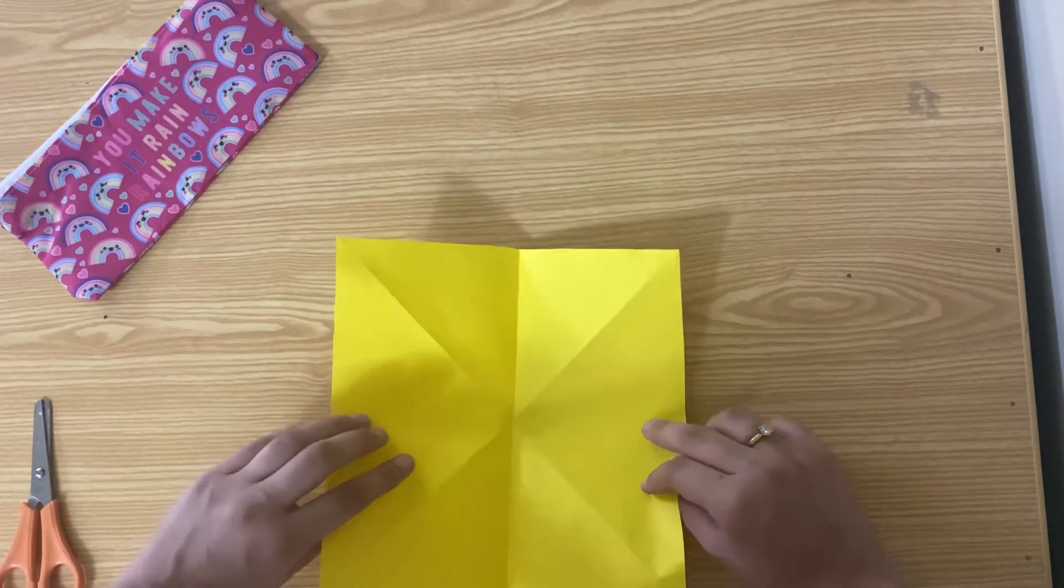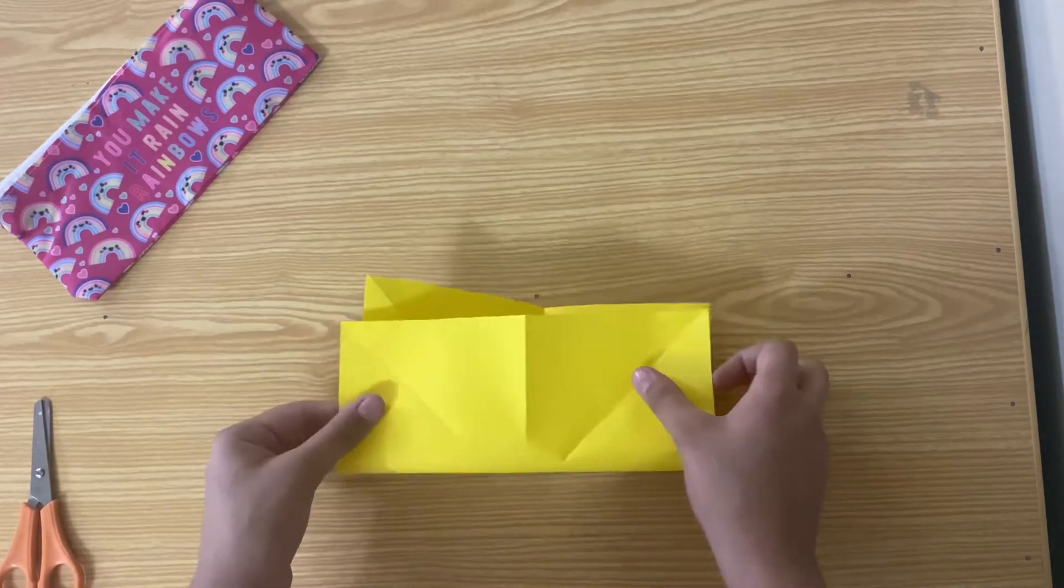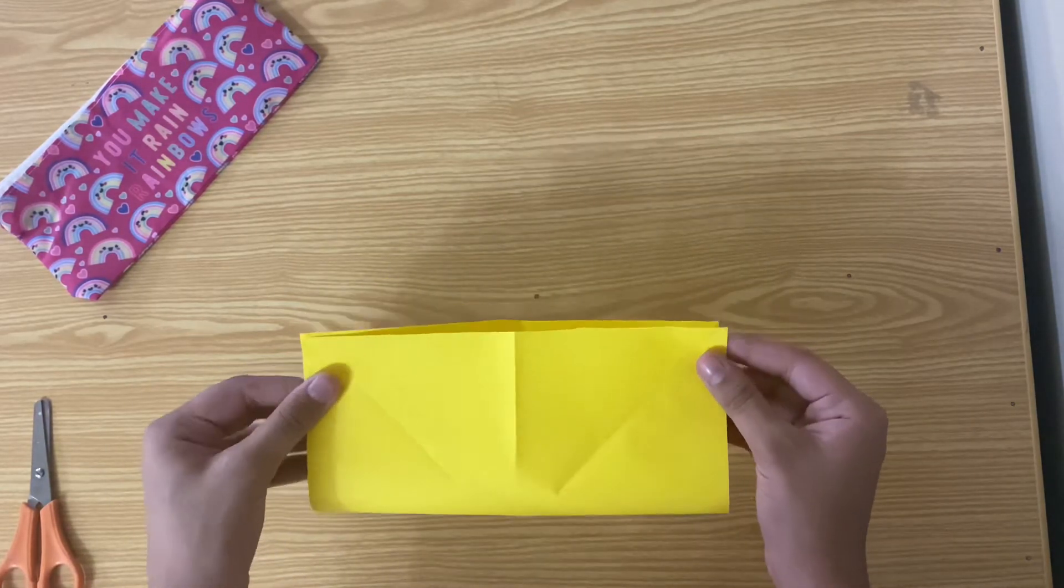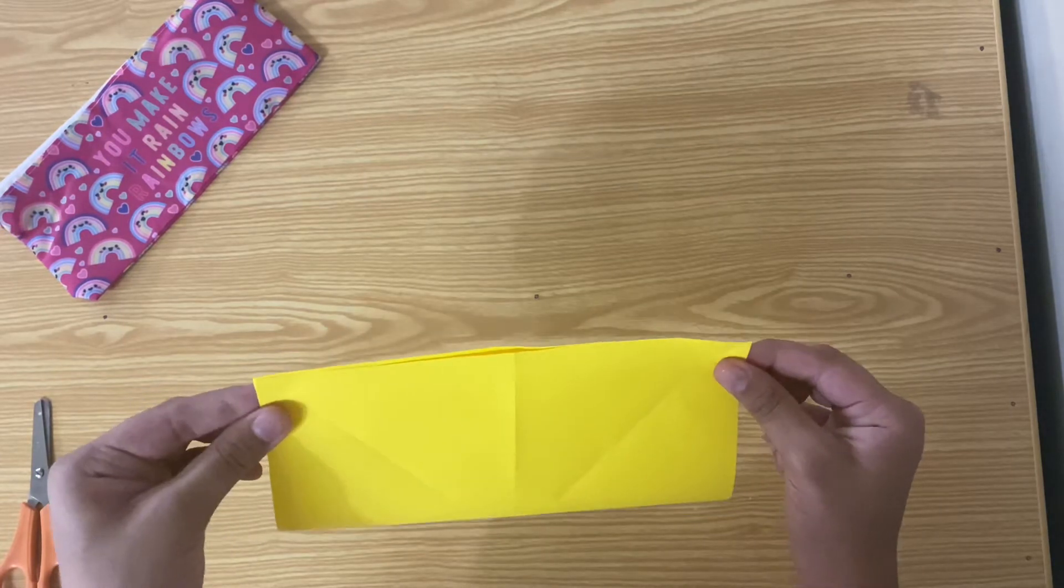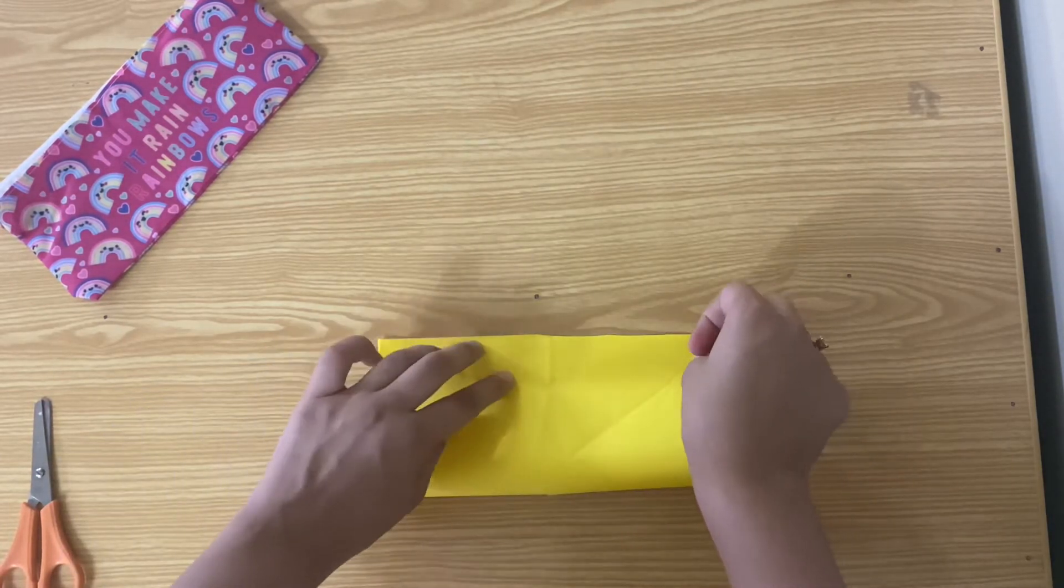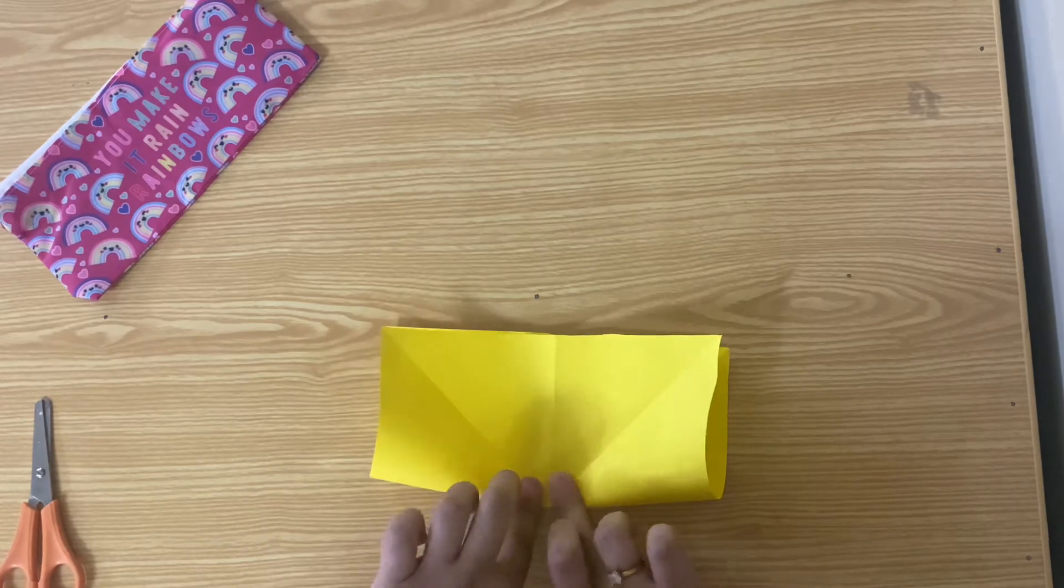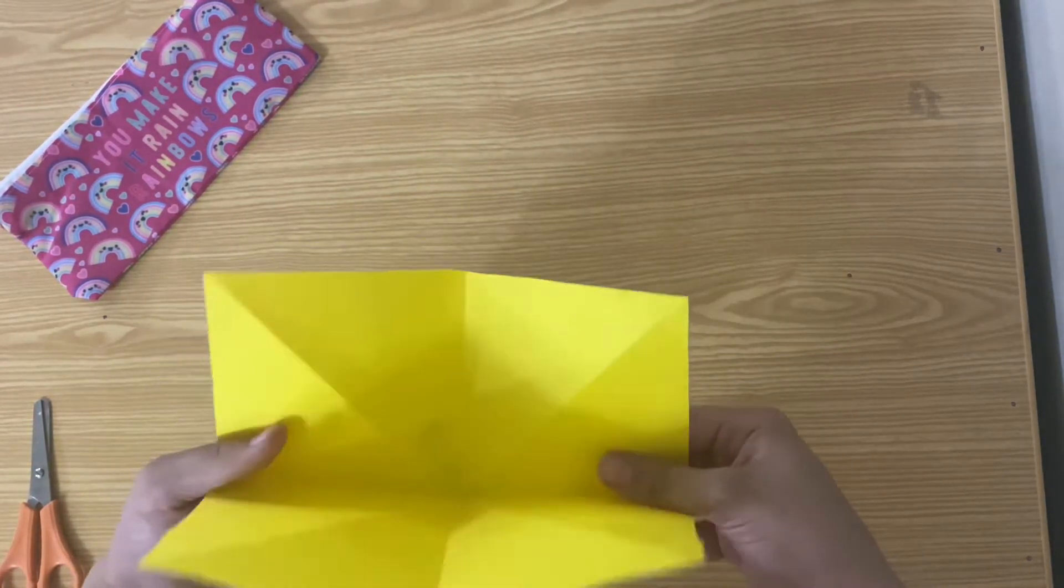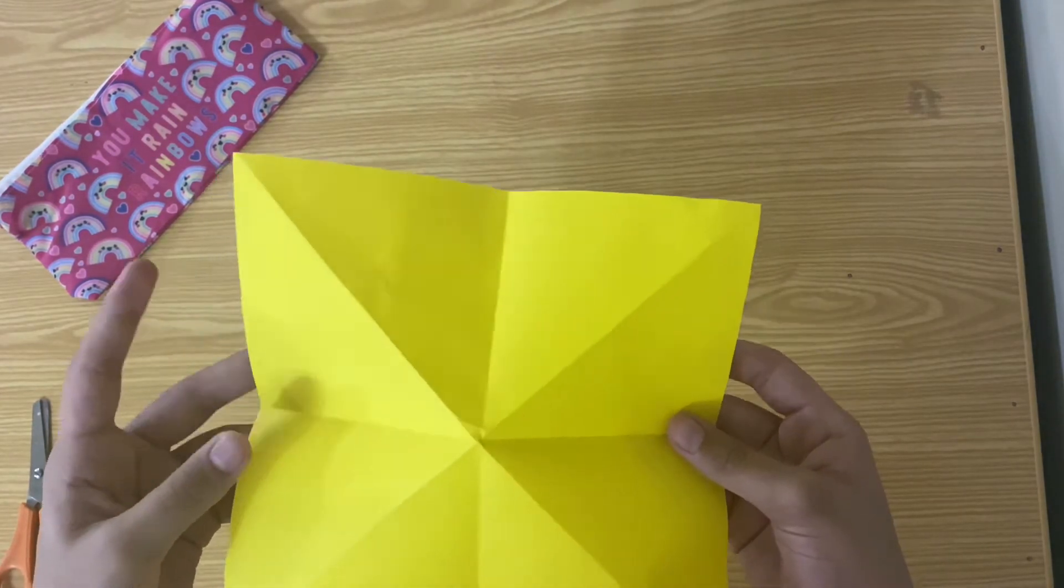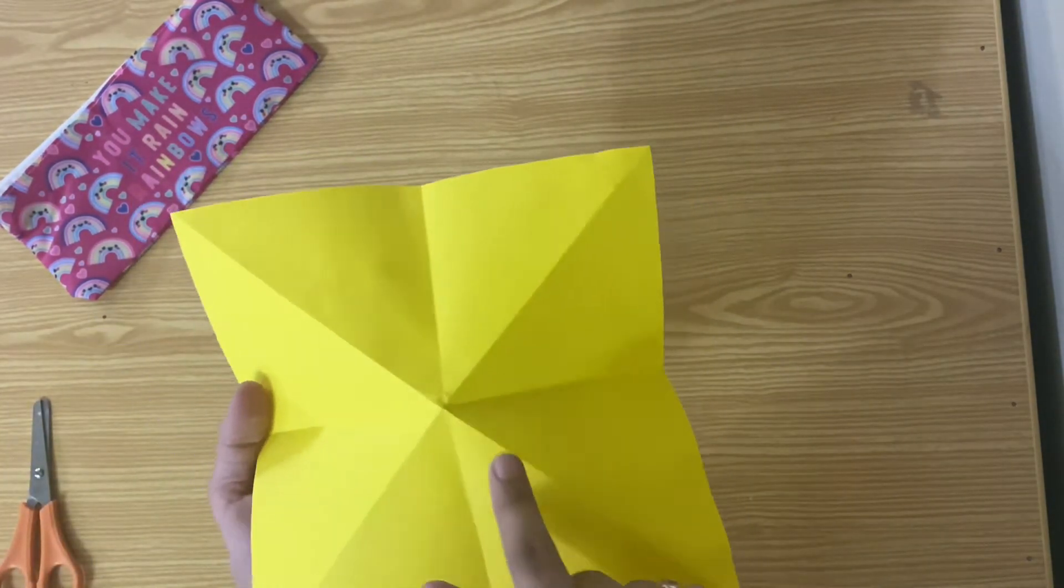Open it up and make another fold here. Now you should have all these lines. You see this cross section here.